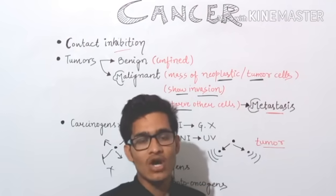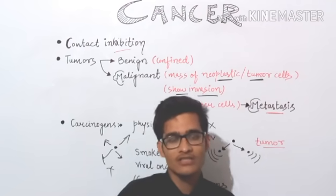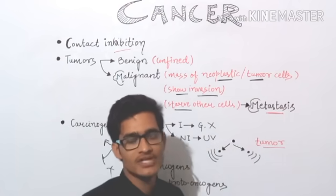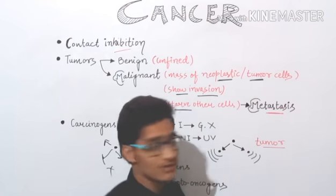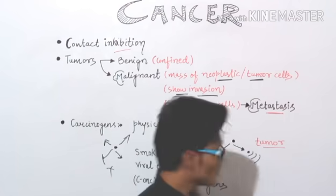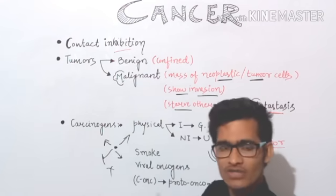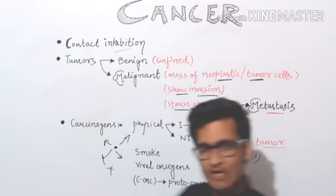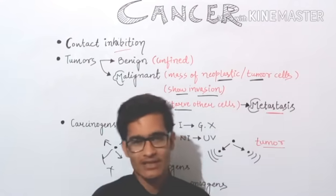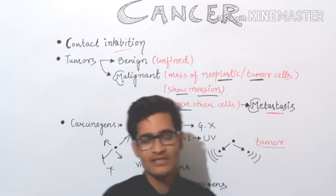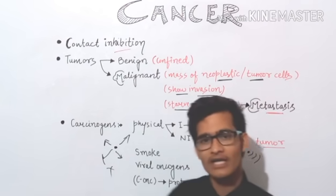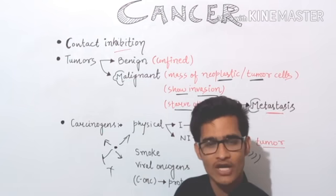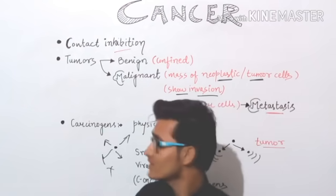Malignant tumor will not let normal cells eat well and will show competition. So these are the differences between tumor types — benign and malignant. Cancer science is getting evolved and is going to be one of the most important branches of biological sciences research.